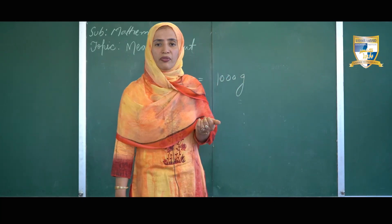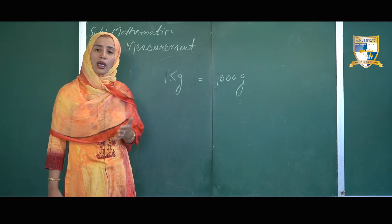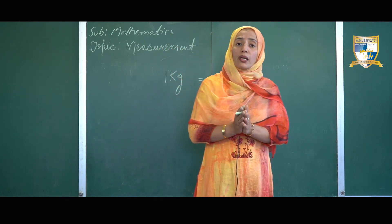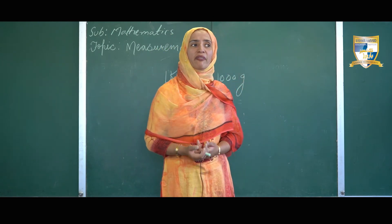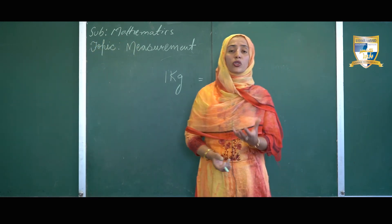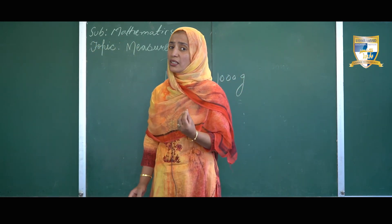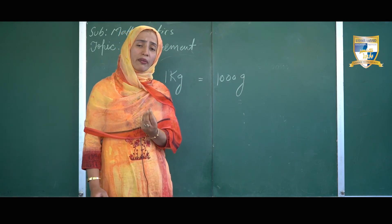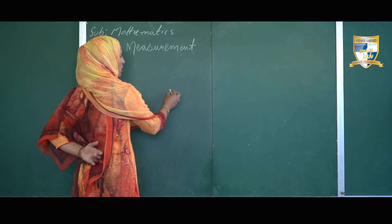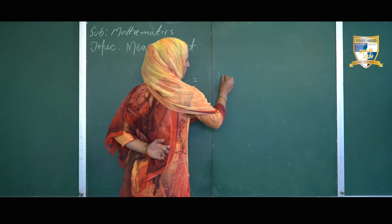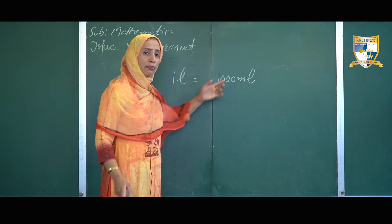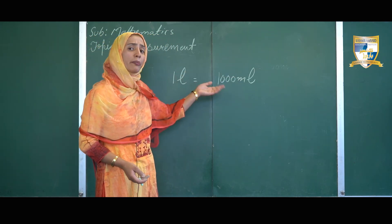Hope you understand the video very well. We will now discuss about capacity. In mathematics, the term capacity is used when measuring how much fluid fits into a container. We have different units of measuring capacity like kilolitre, hectolitre, and decilitre, but in this video we will talk about litres and millilitres. To measure the volume of smaller quantities of liquid we use millilitres, and to measure the volume of higher quantities of liquid we use litres. 1 litre is equal to 1000 millilitres. We can convert litres into millilitres by multiplication and millilitres into litres by division.